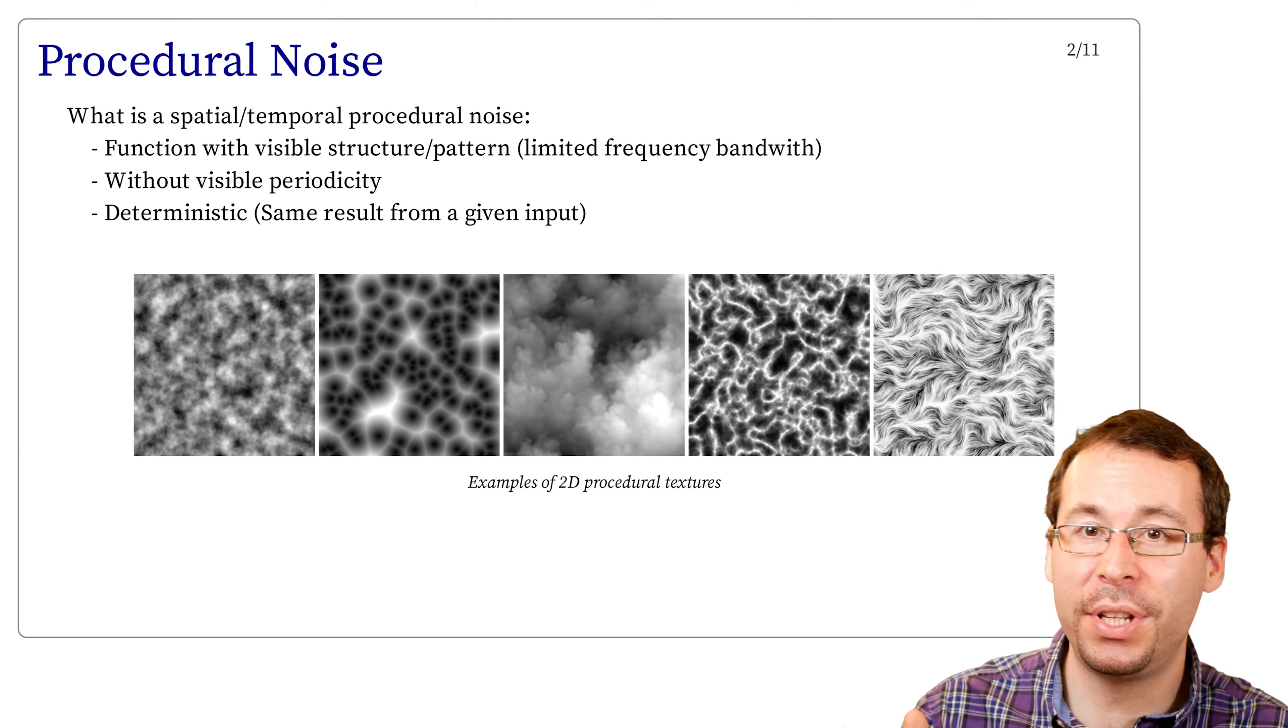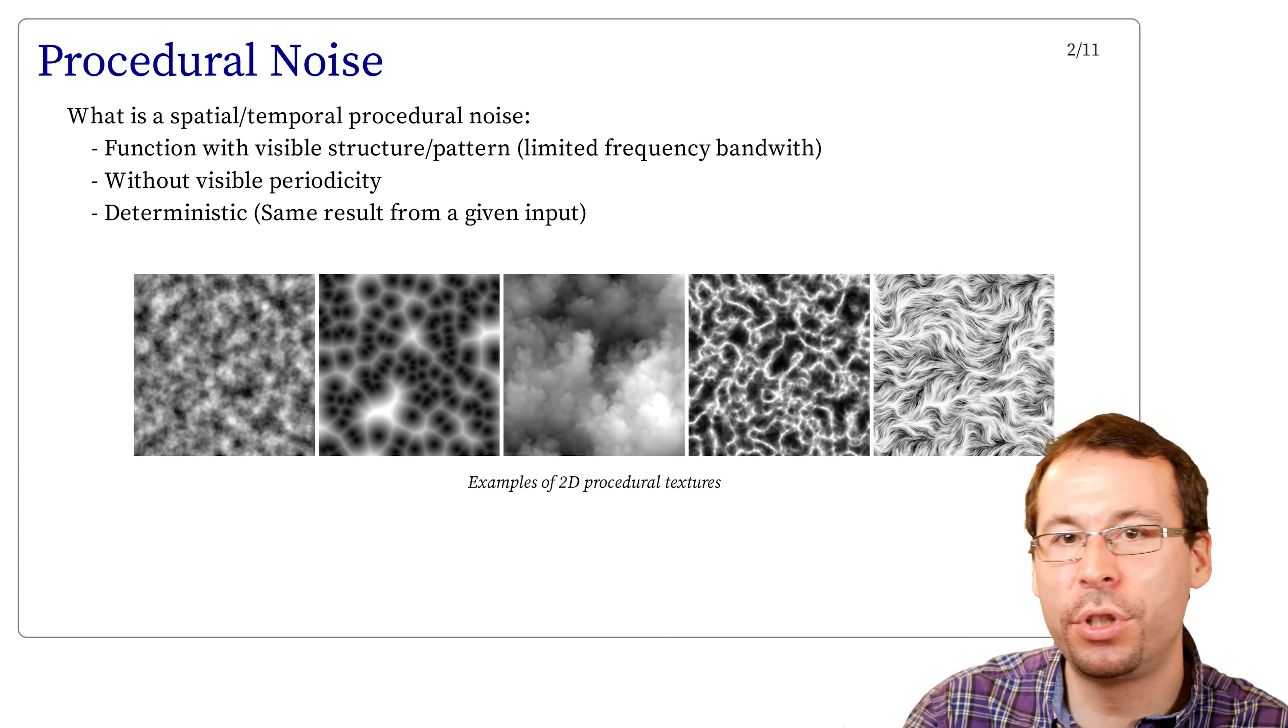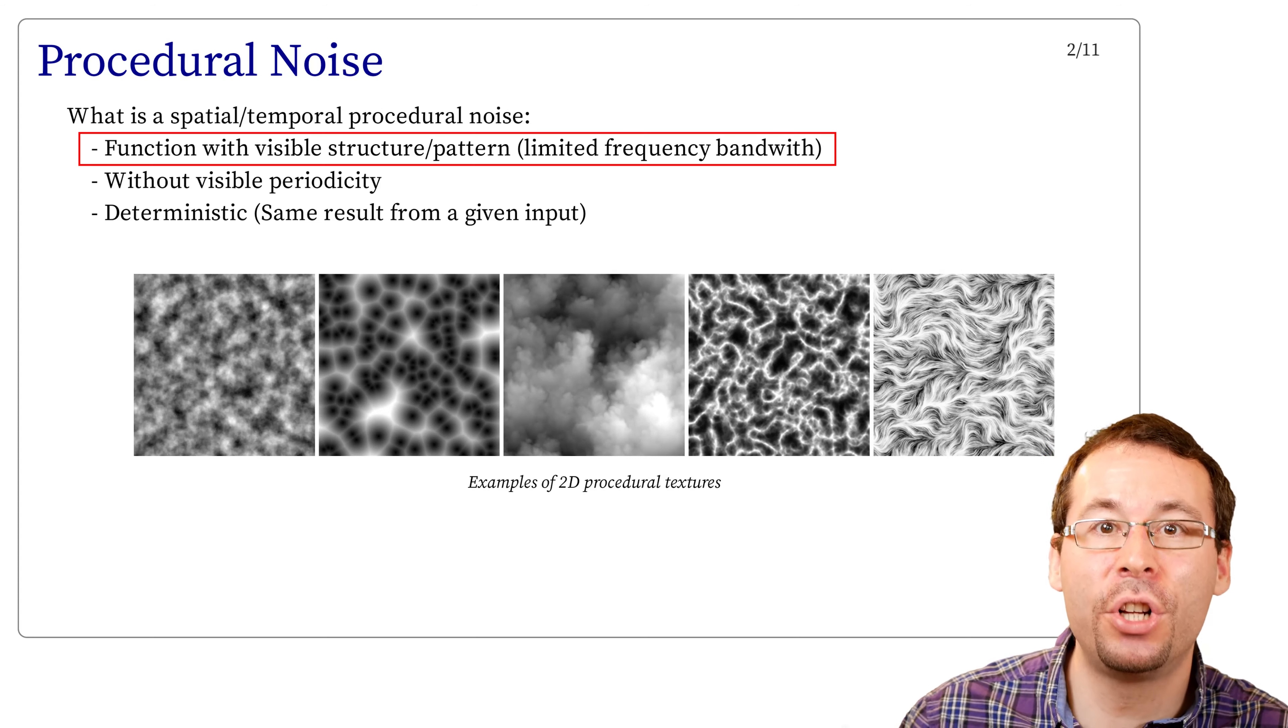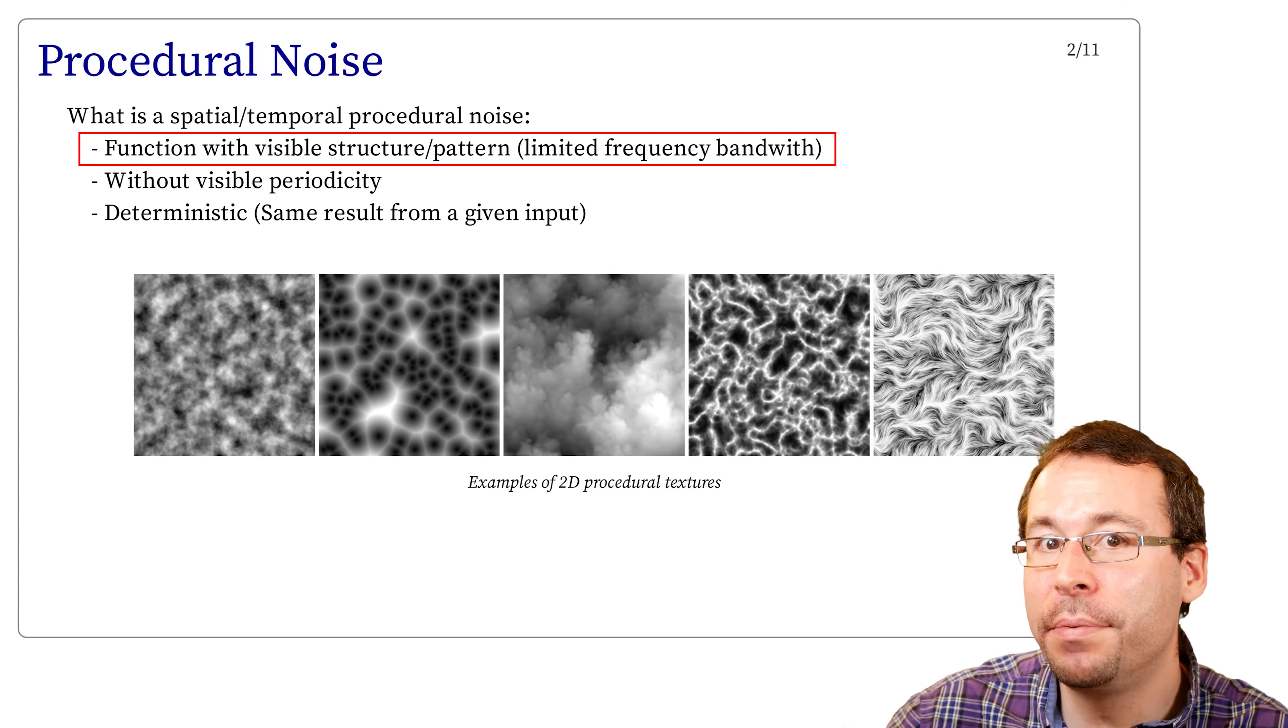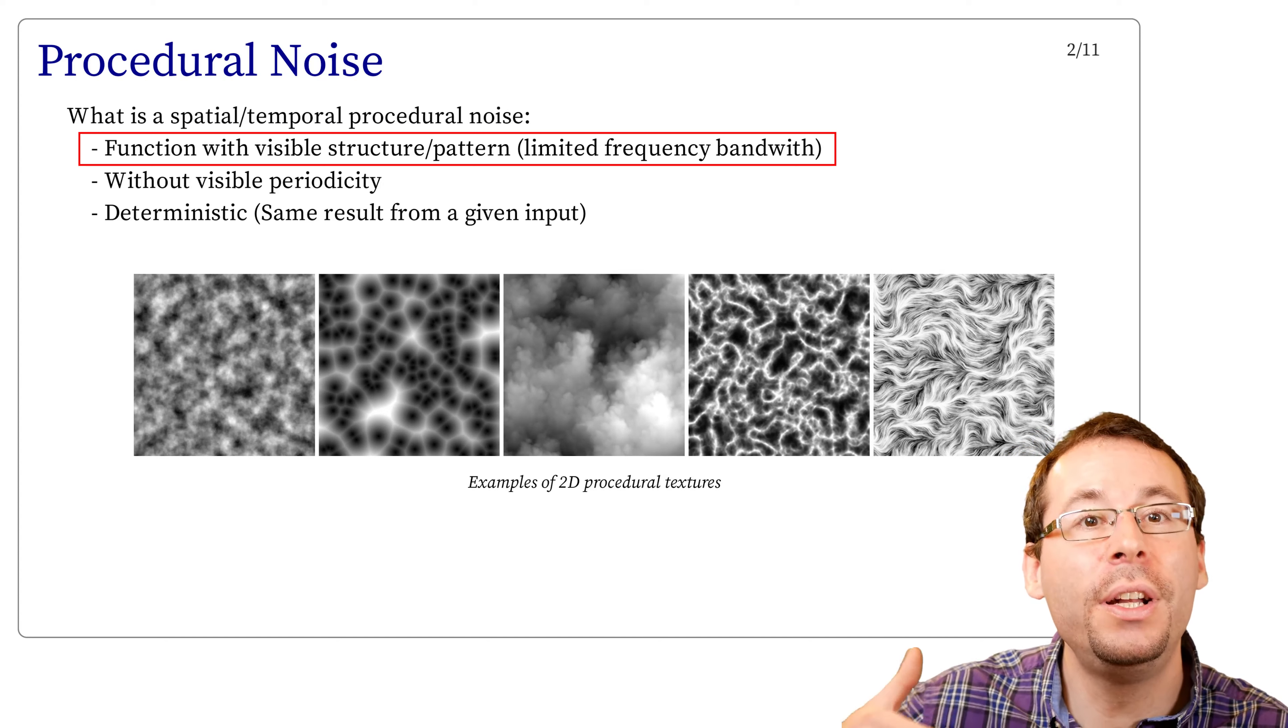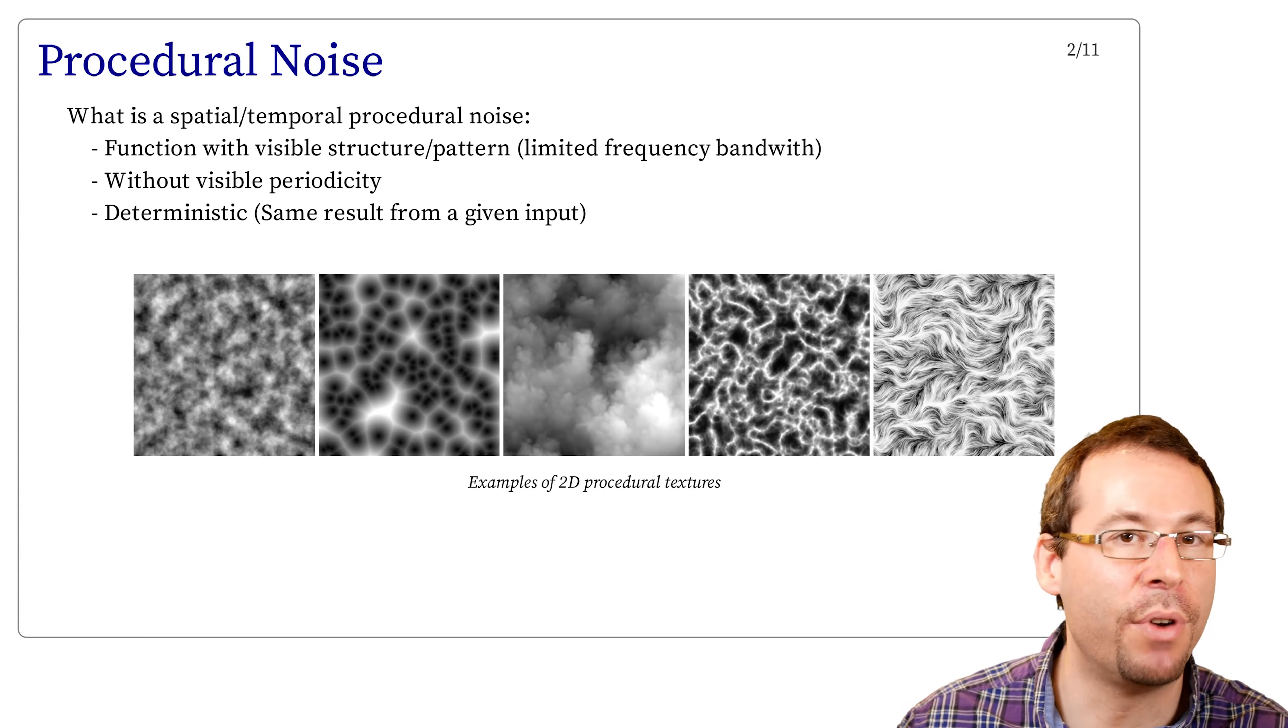First, what do we call procedural noise? That can be spatial and or temporal. In graphics, they are commonly used to model natural-looking phenomena. First, it can be understood as a function that has some visible structure or pattern. And these patterns, they need to have limited frequency bandwidth, like white noise for instance, like a uniform random value, have unlimited frequency bandwidth, and so they do not exhibit pattern structure. So they cannot be used directly in graphics.